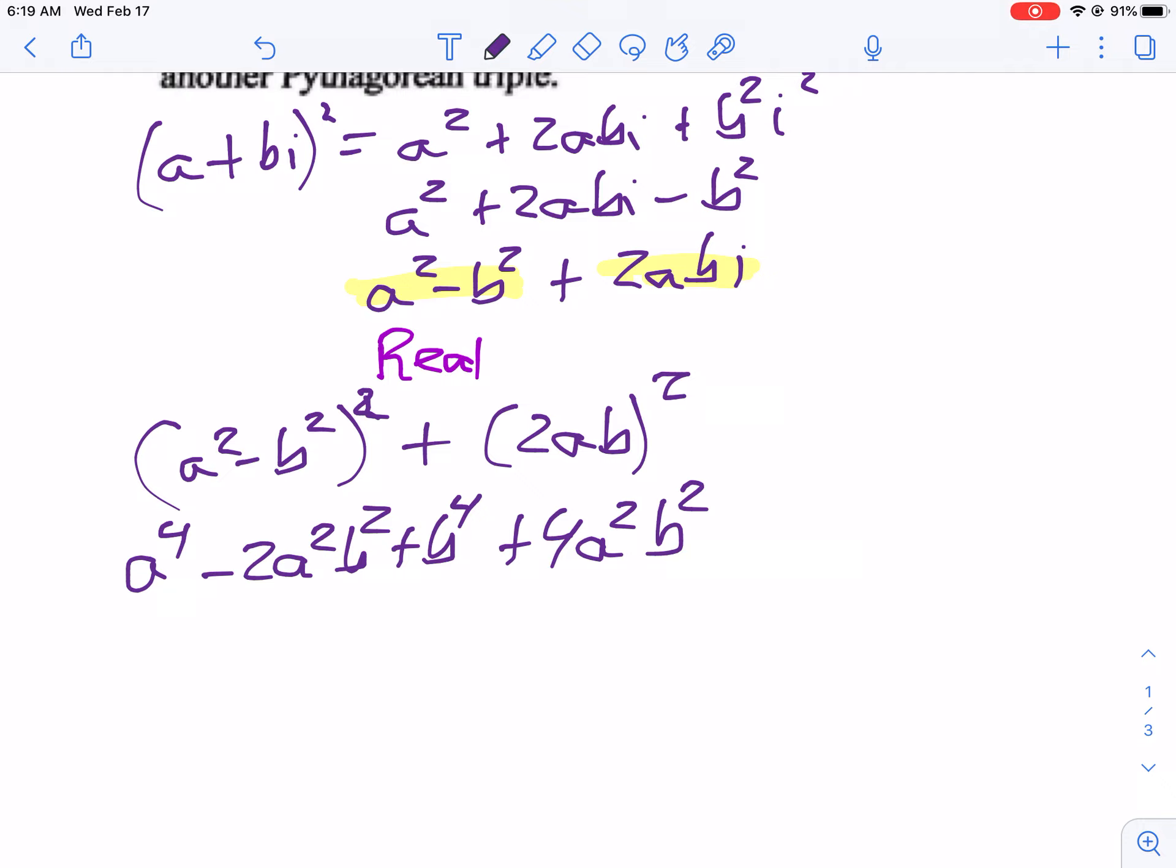Let's simplify that. That'll be A to the fourth plus 2A squared B squared plus B to the fourth.